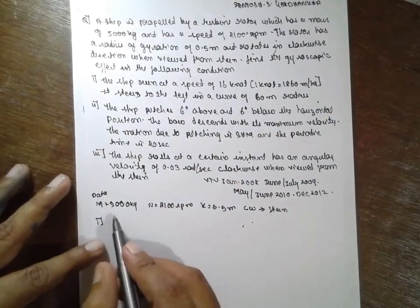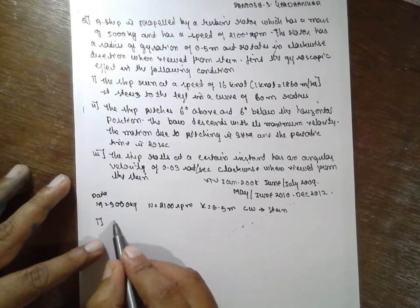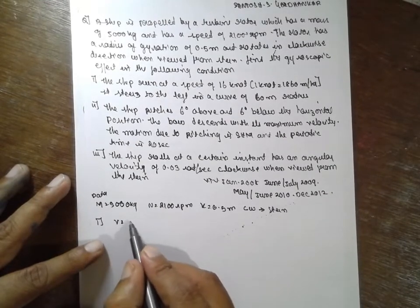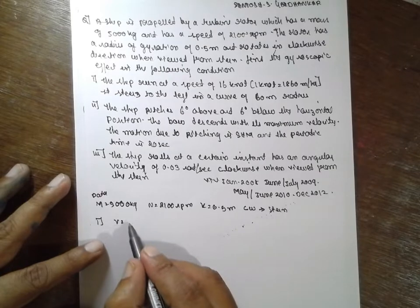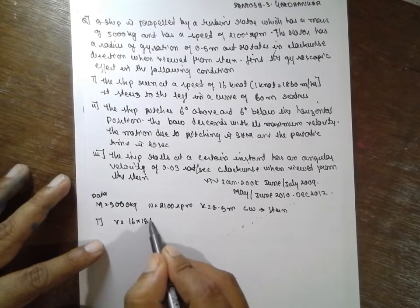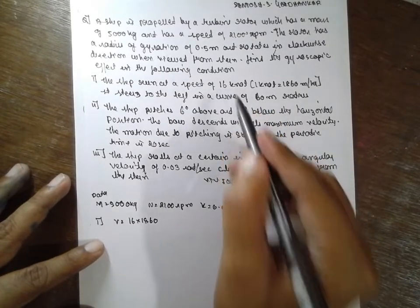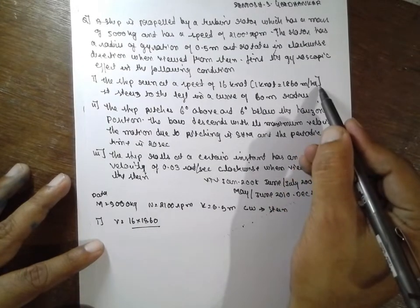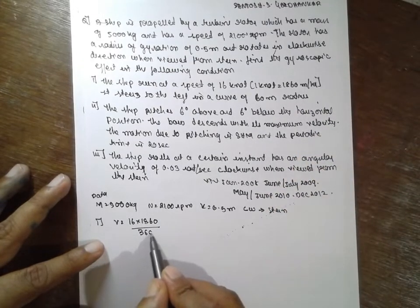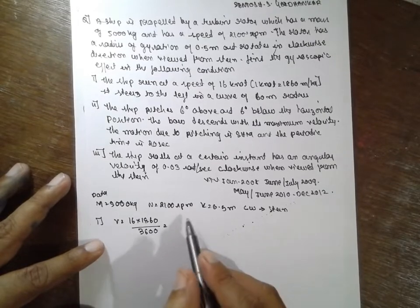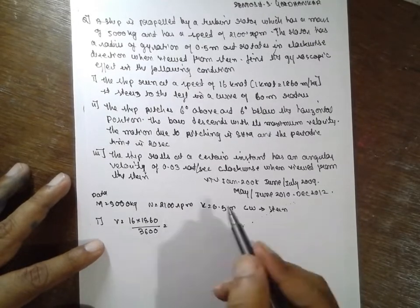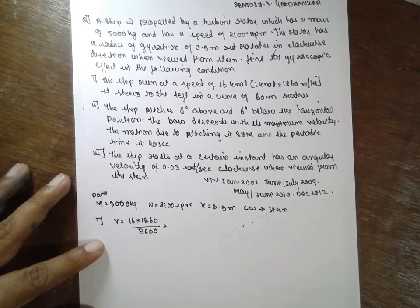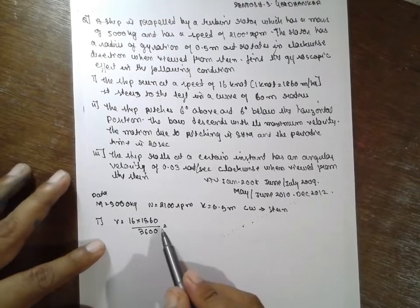When the ship turns speed at a knot, your velocity is given V is equal to 16 knots, which is 16 into 1860 divided by 3600 meter per second. The answer for this one, or directly you can substitute in the formula, you will get the answer.